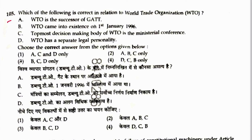Question 105: Correct statements regarding WTO — WTO is the successor of GATT, correct. WTO came into existence on 1st January 1995, not 1996 — so B is wrong. Top decision-making body of WTO is the Ministerial Conference — correct. WTO has separate legal personality — correct. So A, C, and D are correct. Answer is 1.